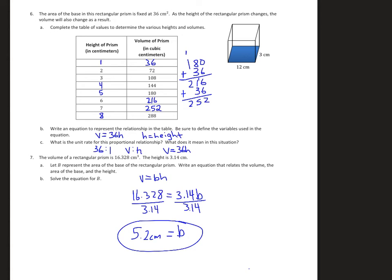For number six and seven, for six you can see I filled out the height going by ones. That was the pattern I was recognizing. For the volume, one centimeter times our base of 36 is 36. Then I had five sets of 36, so I added one set of 36 giving me 216, plus another set of 36 would give me 252. If I added 36 to that, I would end up at 288. My equation is that my volume is 36h, and h is my height. I'm really looking at my unit rate of this proportional relationship, which is 36 to 1. Whatever the height is, I can multiply it by 36 to find my volume.